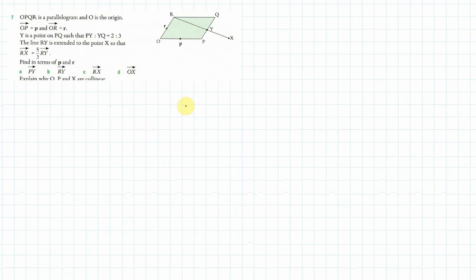Okay. Now the last part of this, number seven. Okay. So let's get the data that we need. So OR is R. We've got Y is two thirds of, PY is two thirds of YQ. Oh, no, it's two to three. Okay. So we've got this is two to three. There we go. Two to three. And the line RY is extended to the point X such that RX is equal to five thirds times RY.